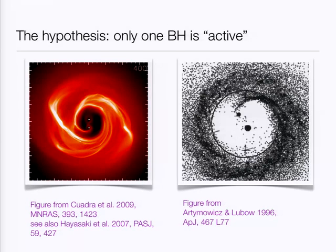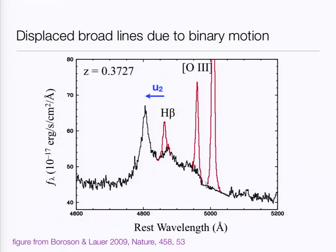If we think about the broad line region as gas that is bound to the smaller of the two black holes, the analogy we can draw is with a single-line spectroscopic binary. As the black hole moves around the center of mass, so should the emission lines from the broad line region go back and forth in velocity. Here is an example of the kind of line profile we might expect. The emission lines from the narrow line region, shown in red, mark the rest frame of the binary. The broad emission line follows the orbit of the accreting black hole, and we have one observable — the velocity shift U2. Ideally, if we observe for long enough, the peak of the broad line should oscillate back and forth.